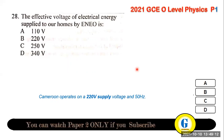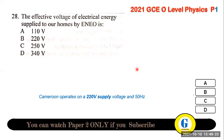Question 28: the effective voltage of electrical energy supplied to homes by AES (the electricity company in Cameroon) is 220 volts at a frequency of 50 hertz.